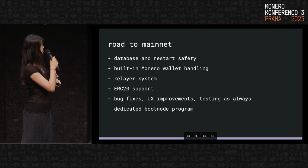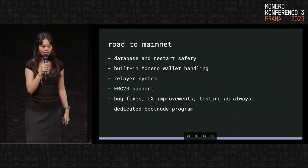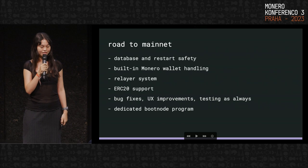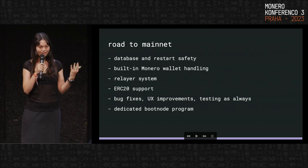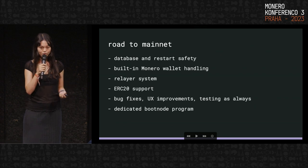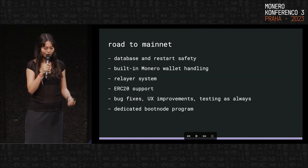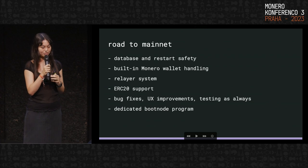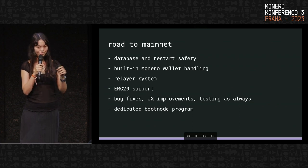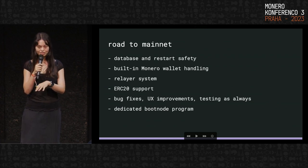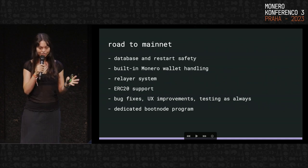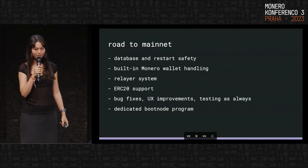The first thing is database and restart safety. Essentially, in case the node shuts down at any point, the user should be able to recover all the data. Also built-in Monero wallet handling — the first iteration required running Monero wallet CLI separately, which was a little not user-friendly. Now it's built in and just starts and handles it for you.